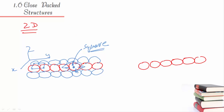The coordination number — one, two, three, four — and when you combine them together it would look like a square. Now, what is the second possibility? You will keep the other layers in the voids, placing them in the void.